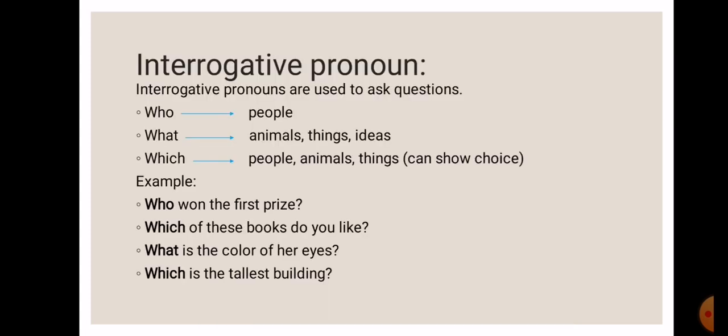Moving on, let's look at the interrogative pronoun. As the word suggests, it is used to ask questions like who, what, which. They can replace a person, place or thing in a question. For example, who will tell you, it's basically a question when you want to know the name of the person, it's about people. What can be about an animal, thing or an idea. Which can be for people, animal, things as well as it can show choice. It can help you choose between two things.